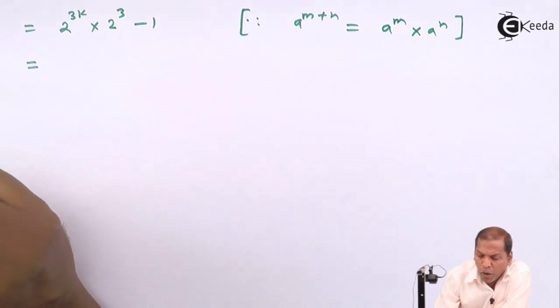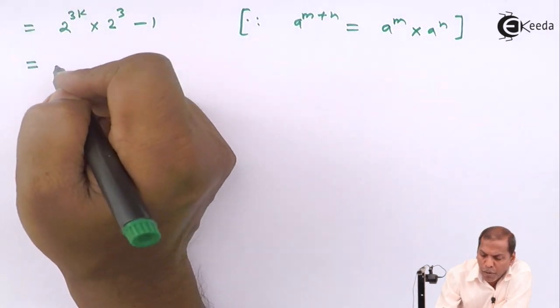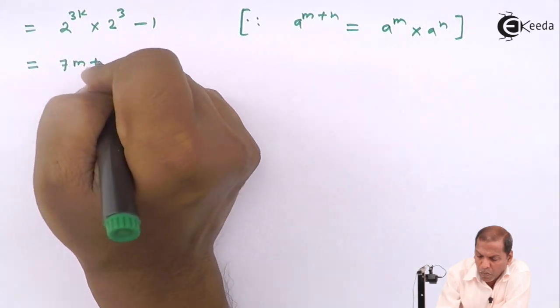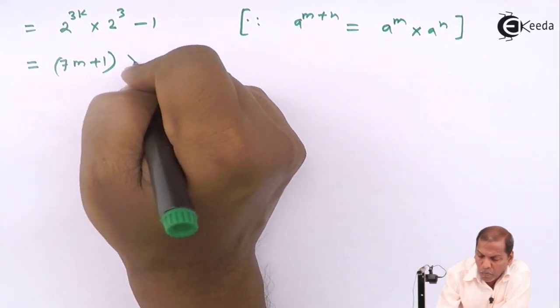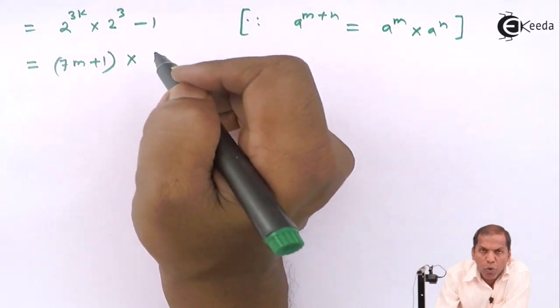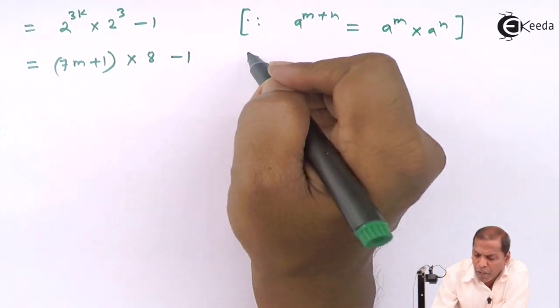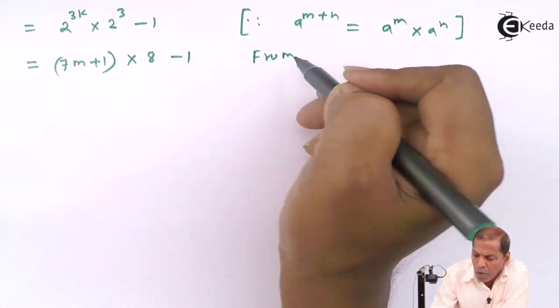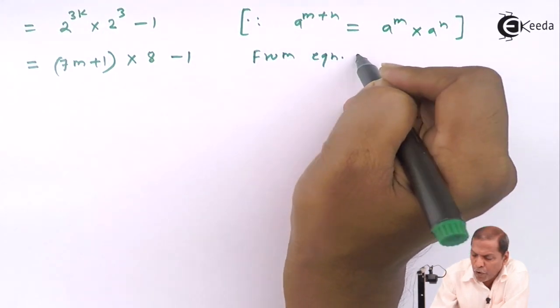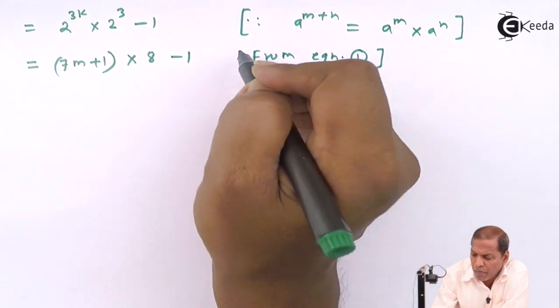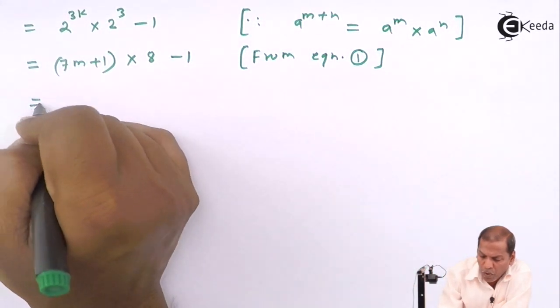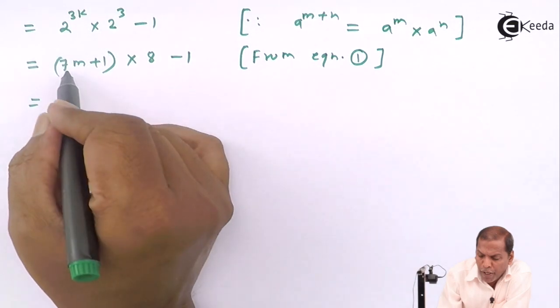So that equals, now 2 raised to 3k by using equation number 1 we substitute as 7m plus 1, into now 2 cube that gives us 8, then we write minus 1 as is. So this statement we get from equation 1.